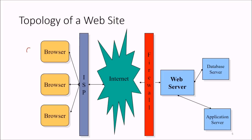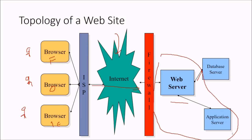This is a topology of a website. There are many users accessing through different browsers — Firefox, Opera, Internet Explorer. You have an internet service provider in between and you go through the internet. Then there is a firewall, a web server, and a database server. An application server can be seen separately or together, since it is required for handling application components like EJBs.